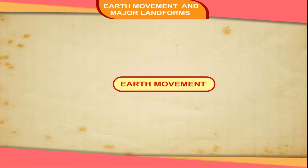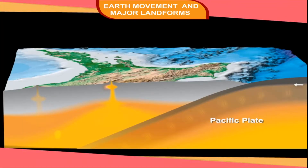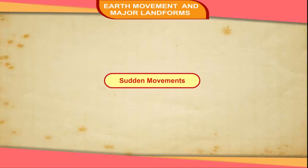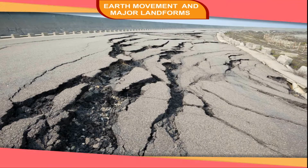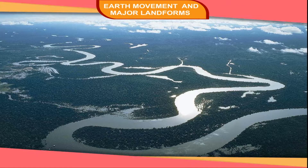Earth Movements. The powerful endogenic forces operating from within the crust are also known as tectonic movements. Tectonic movements can be divided into two types. Sudden movements bring abrupt changes on the Earth's surface. Earthquakes and volcanic eruptions are examples of these movements. Such changes can cause a part of the land to be fractured or the course of a river to be changed.